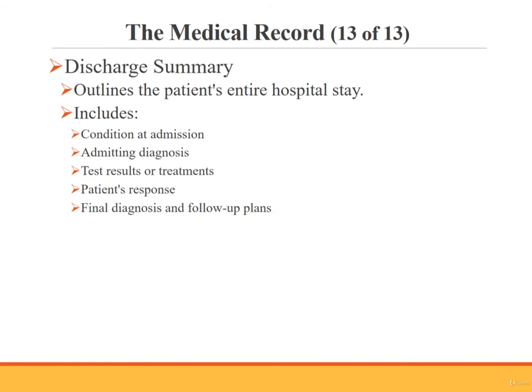The last common element of the medical record is the discharge summary, which is an outline of the patient's entire hospital stay. It includes the patient's condition at the time of admission, the admitting diagnosis, any test results or treatments, the patient's response to those treatments, the final diagnosis, and any follow-up plans.